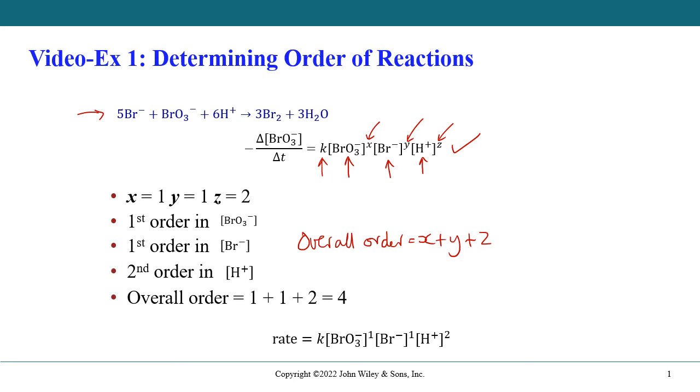And then to write the final rate equation, which is given here, we say that the rate of reaction is equal to the rate constant k, multiplied by the concentration of the bromate ion raised to power 1, multiplied by the concentration of the bromide ion raised to power 1, multiplied by the H plus ion concentration raised to the power 2.